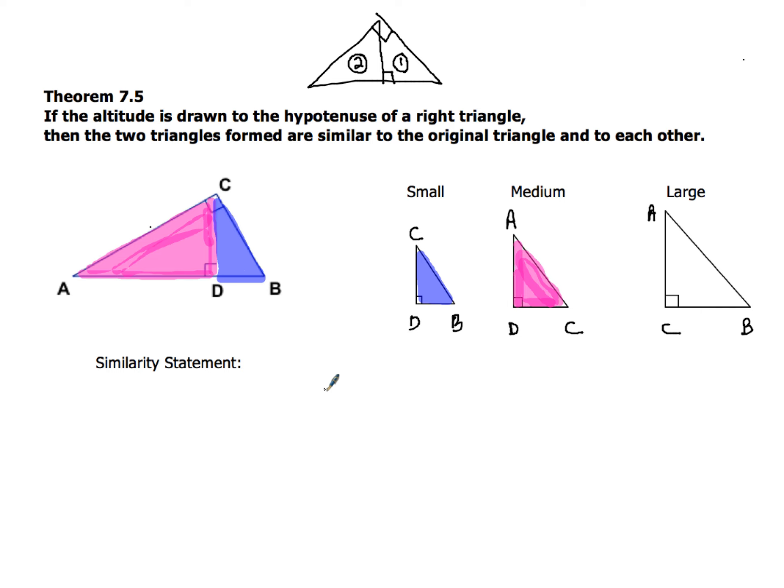Now writing the similarity statement is a piece of cake. I like to go in this order. I like to go from down first and into the right second. So the first triangle is going to be triangle CDB, because that's in the down and right order. Similar to triangle ADC, which is going to be similar to triangle ACB. That's all there is to it. There's your similarity statement for that original problem.